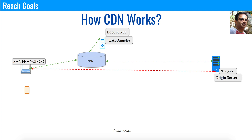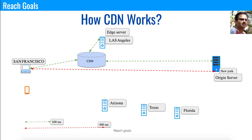The edge server can receive content either pushed directly from the origin server or by fetching it on demand. Companies like Akamai or Amazon have edge servers across the globe, so wherever you're accessing from, there's a closest location to serve content quickly. For example, accessing from San Francisco to the origin server might take 400 milliseconds, but with a nearby edge server it might take only 100 milliseconds — that's how CDN reduces latency.